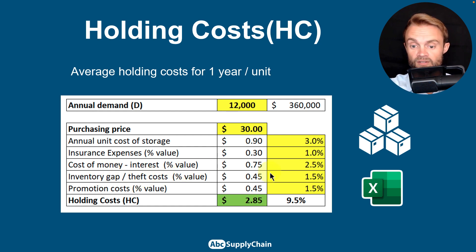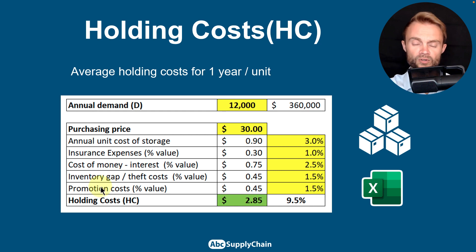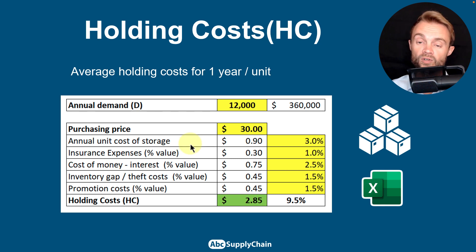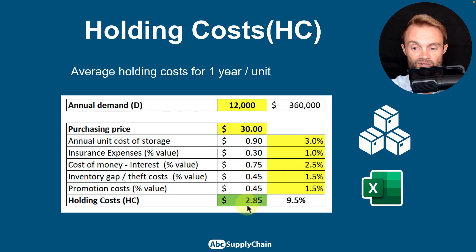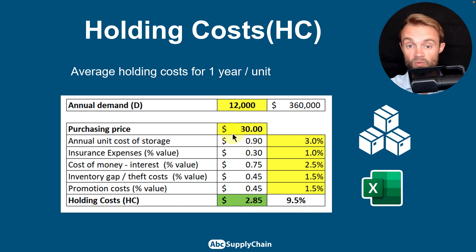We also include the inventory shrinkage or theft cost — all stock that disappeared after an inventory check — and the promotion cost, which is your average markdown for this category. I used only 1.5%, but it will be much higher for trendy fashion brands. The total holding cost comes to $2.85, or 9.5% of the purchasing price. This is the holding cost you'll use in the formula.